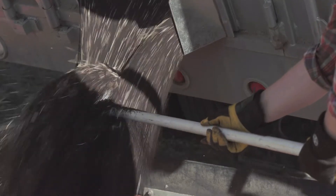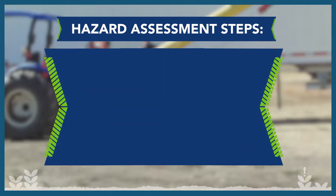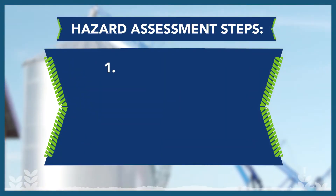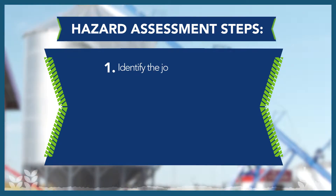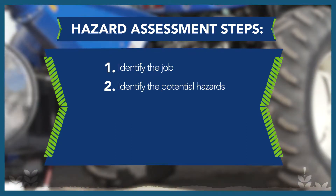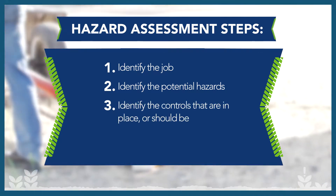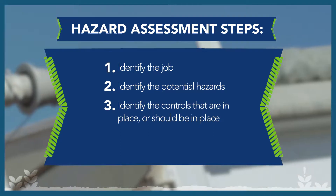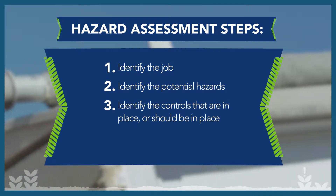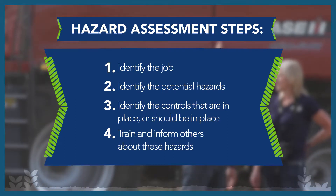In a hazard assessment, you want to complete the following steps. One, identify the job. Two, identify the potential hazards. Three, identify the controls that are in place or should be in place. And four, train and inform others about these hazards.